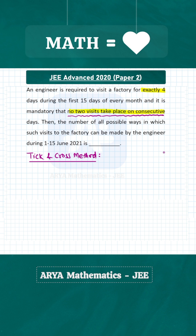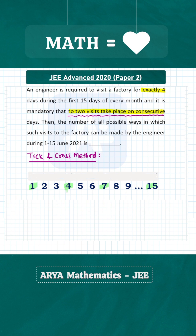In the Tick and Cross method, suppose we have to select 4 days. Let's say we select days 1, 4, 7, and 15 as an example — no two of these selections are consecutive. Corresponding to these selected days we place a tick symbol, and for the days which are not selected we place a cross symbol.